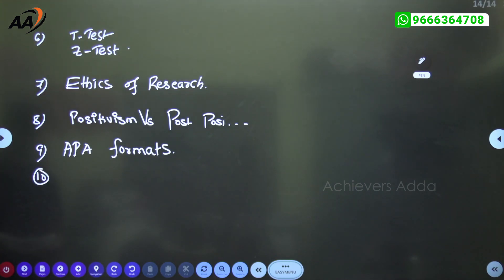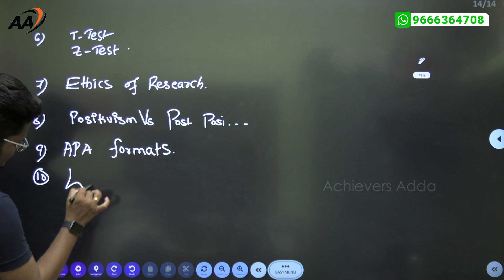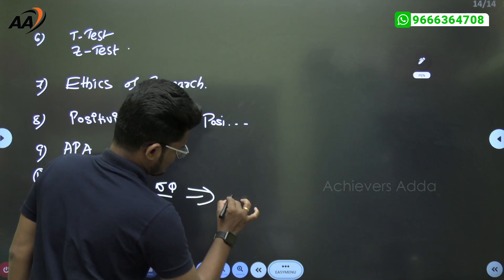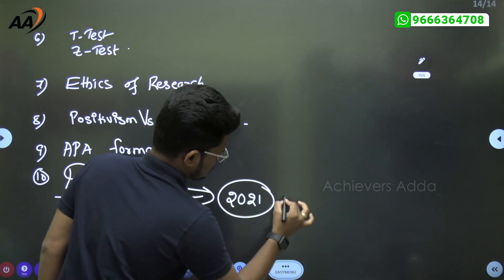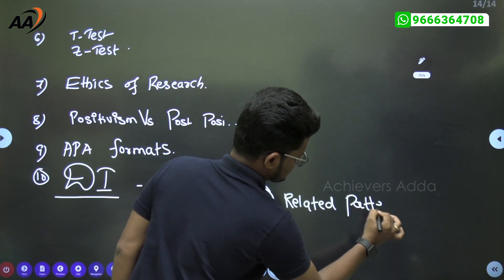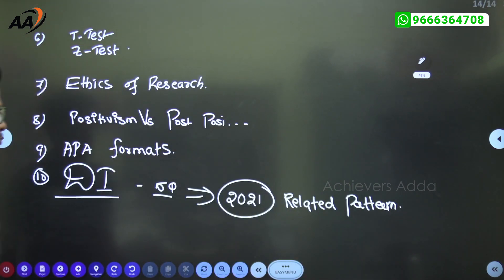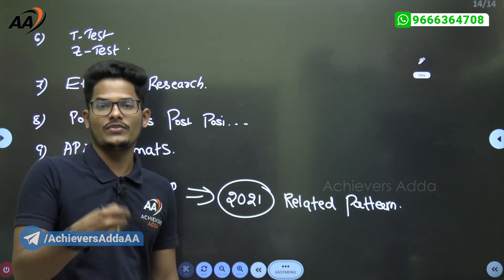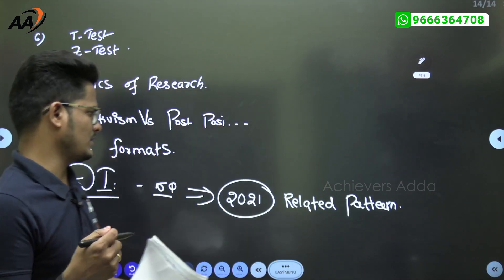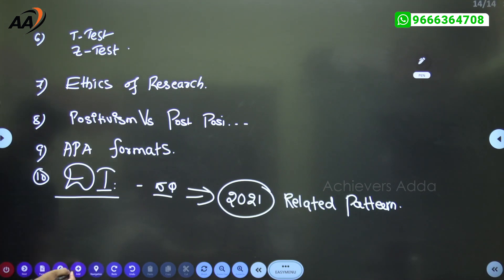Next is data interpretation, five questions. This is same as 2021 related question, same pattern has been given. DI is more table-related question, but this is not sure. I tried to get which type of DI - whether table related, ratio or percentage - but I did not get that information, sorry about it.